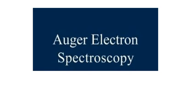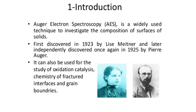Hello everybody. Today I will discuss Auger Electron Spectroscopy, one of the most important techniques used in catalysis. Let's see what Auger Electron Spectroscopy is, what the Auger effect is, and how the spectra is recorded. Auger Electron Spectroscopy is a widely used technique to investigate the composition of surfaces of solids. It was first discovered in 1923 by Lise Meitner and later independently discovered in 1925 by Pierre Auger. It can also be used for the study of oxidation, catalysis, chemistry of fractured interfaces, and grain boundaries.